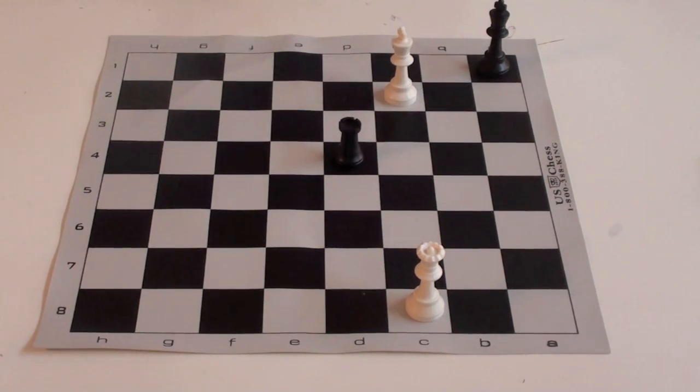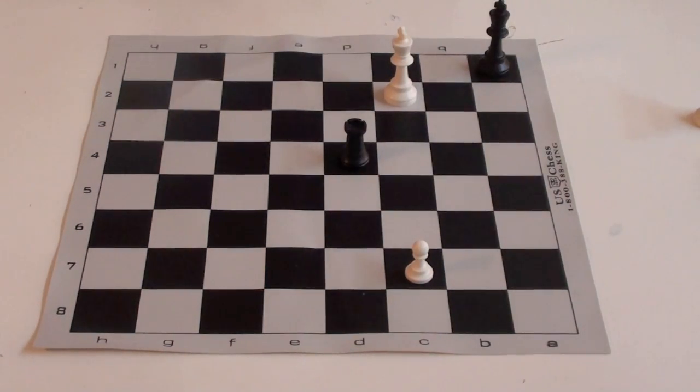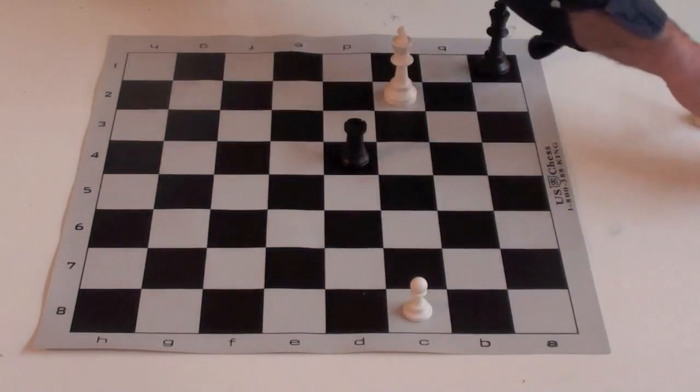In this position, we know that black is going to get his draw. So what can white do? White can under promote to a rook.